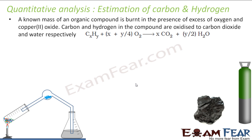Let us try for carbon and hydrogen. If you know the ways to detect carbon and hydrogen, we used to heat carbon and hydrogen in the presence of copper oxide, and then we used to get CO₂ and H₂O. This was what we used to detect carbon and hydrogen. Now we will use almost the same similar method to estimate carbon and hydrogen.